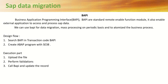Next is BAPI — Business Application Programming Interface. BAPIs are standard remote-enabled function modules developed by SAP. It also enables external applications; for example, if a company is using some external software along with SAP which has a middleware, the middleware can directly call this BAPI and access or process the SAP data. You can use BAPI for data migration, mass processing on a periodic basis, and to optimize the business process.